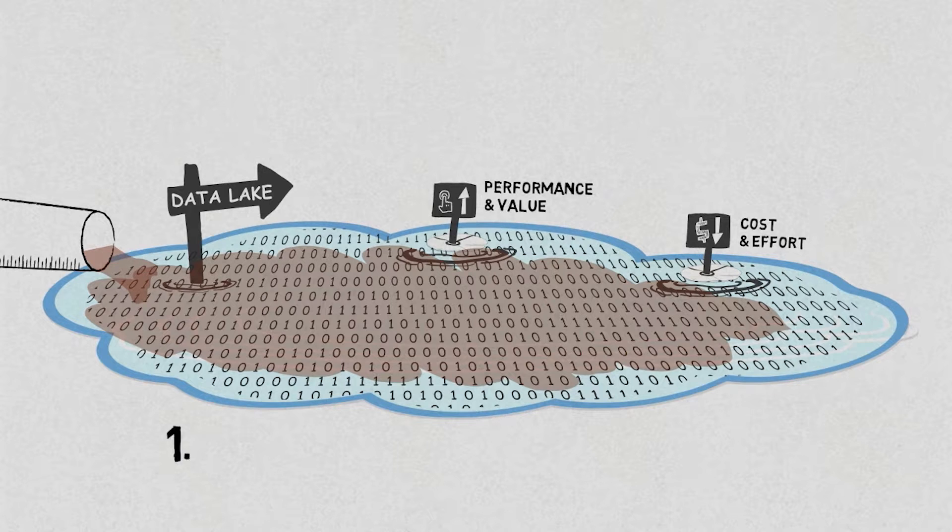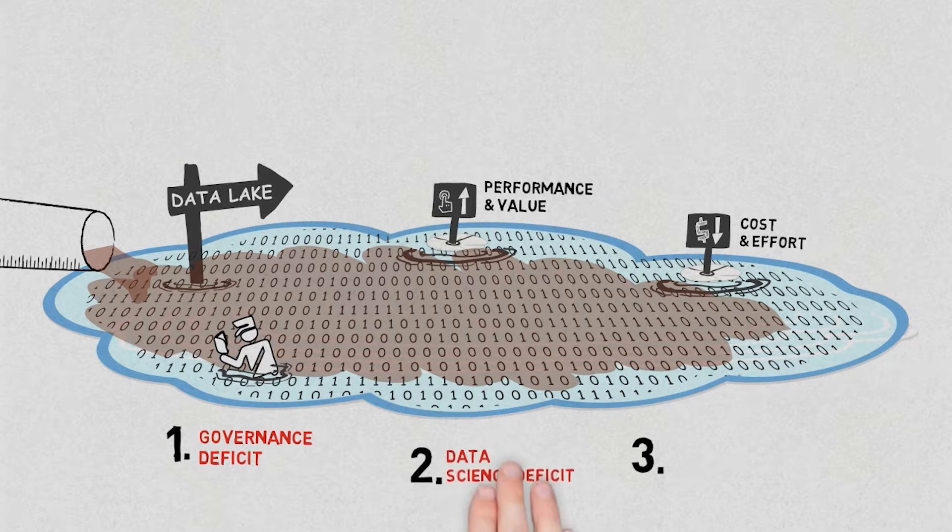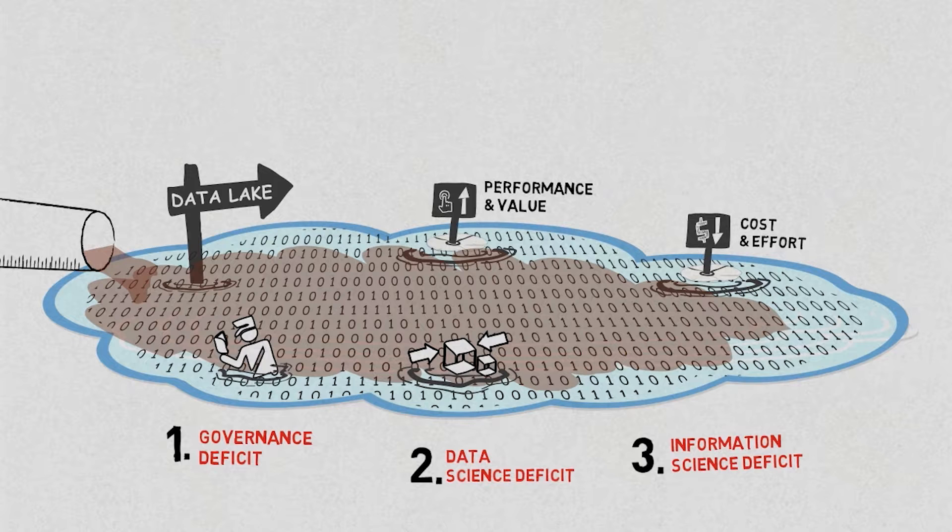This is triggered by three key shortcomings: data science deficit caused by poor tooling that data scientists can work with in the new environment, therefore requiring data scientists to be retrained, and an information science deficit caused by a shortage of skills needed to marry analytical context with computer science and programming techniques.